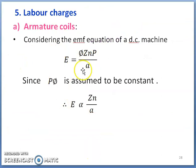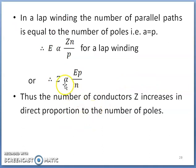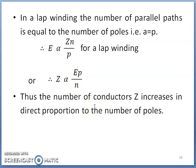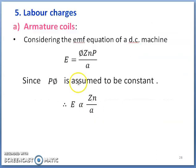Coming to labor charges. Considering the EMF equation for a DC machine, E = φZN/A. Since flux per pole is assumed constant, E is proportional to ZN/A. For lap winding, A = P, therefore Z is proportional to EP/N. This means if a large number of poles are used, the number of conductors will be more, and that will increase labor charges in the case of armature coils.